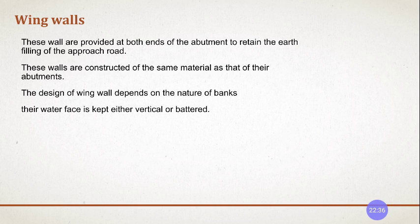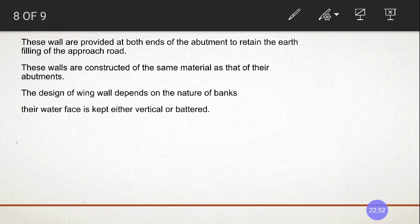Wing walls are constructed of the same material as that of abutments. The design of wing walls depends upon the nature of the banks — the type of bank and topography determine which type of wing wall is to be provided. Their face with water is either kept vertical or battered, where battered means inclined with a slope.